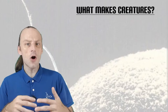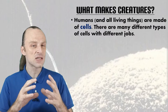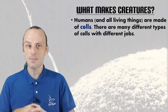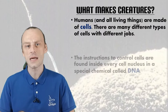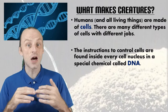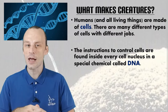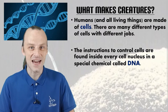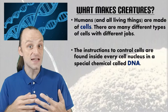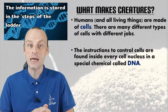First, a little bit of background on what makes creatures. Humans and all other organisms are made up of cells, which are the smallest unit of living matter. There are many different types of cells and they all do different jobs inside the body of their organism, but the instructions which control cells are usually found inside the cell nucleus — the centre of the cell — in a special chemical which you might have heard of. It's called DNA. DNA is a special chemical because it is able to read and store information, and this is how cells know what they need to do inside the body.